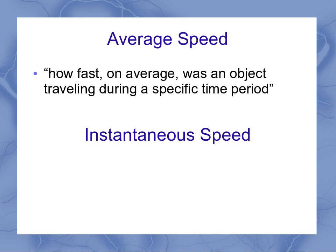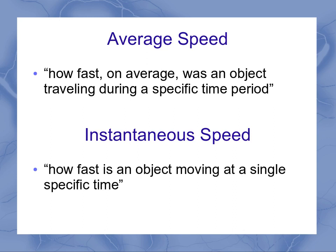Average speed means how fast, on average, was an object traveling during a specific time period. Instantaneous speed is how fast is an object moving at a single specific time.